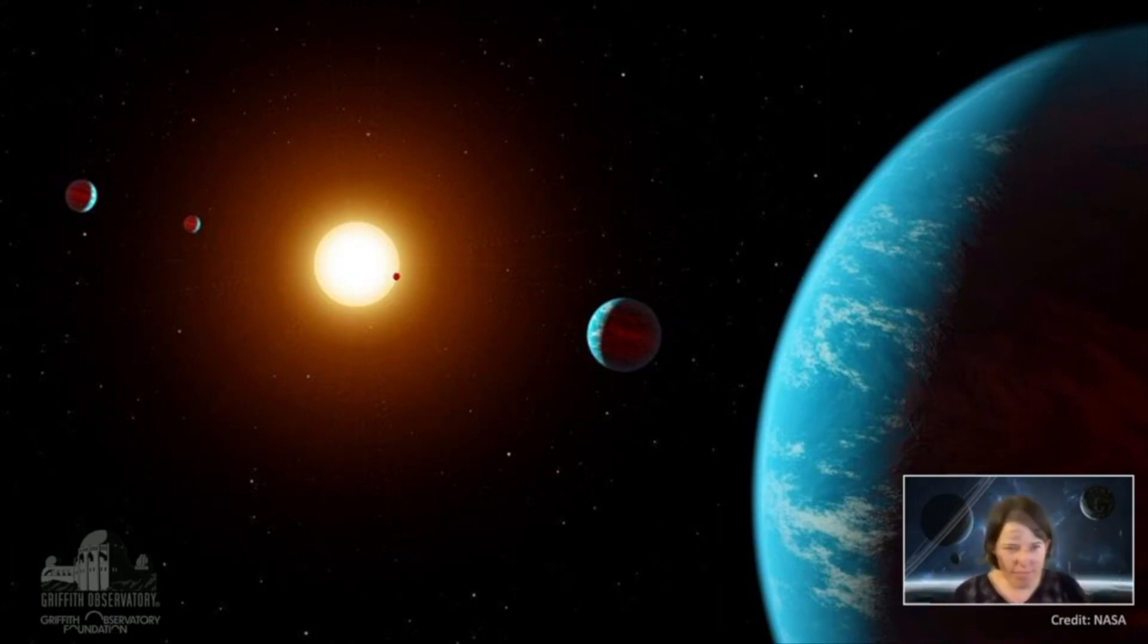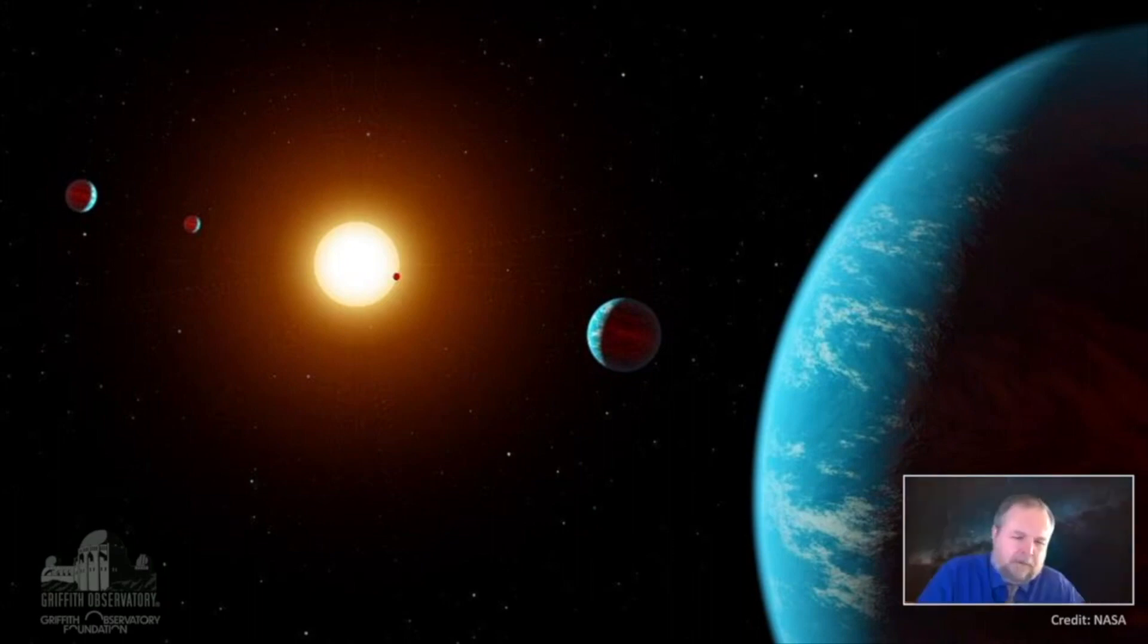The cool thing about this system is that the five inner planets are in a chain of three-to-two resonances. The inner one goes around three times, the next one goes around twice, that one goes around three times, the next one goes around twice—all the way out, three-to-two resonances.